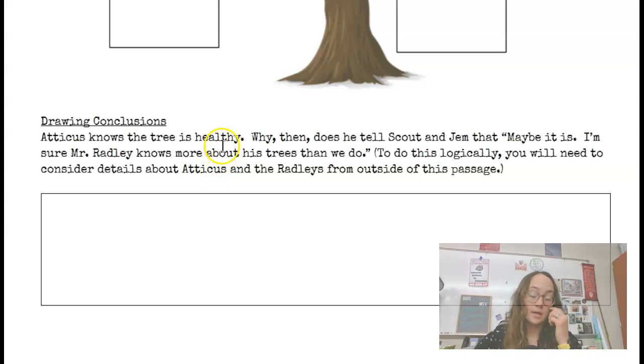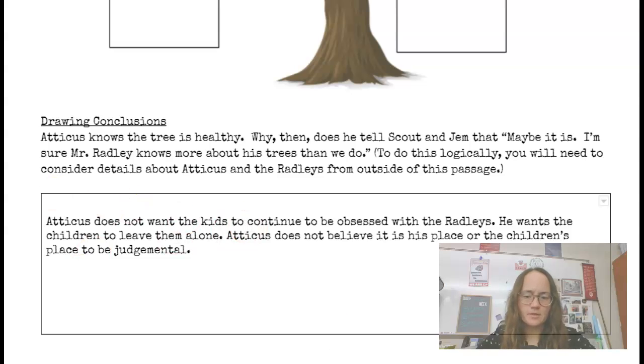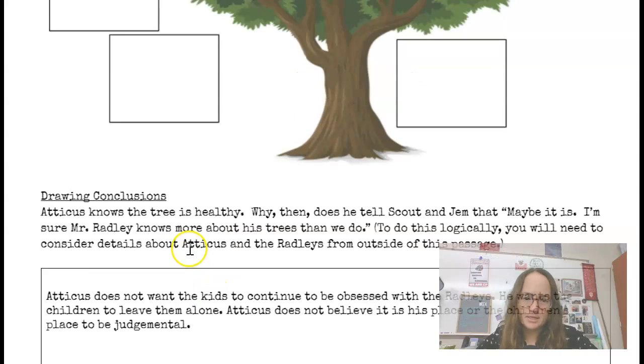Let's go ahead and look at this drawing conclusion section next. It says Atticus knows the tree is healthy. Why then does he tell Scout and Jem that maybe it is? I'm sure Mr. Radley knows more about his trees than we do. To do this logically, you'll need to consider details about Atticus and the Radleys from outside of this passage. So we're asking ourselves why Atticus, when he fully knows that the tree is alive, why would he say that quote? Go ahead and see if you could come up with something and then check back in. You could pause the video, check back in to see if your answer is somewhat similar. So for this one, we could write something along the lines of Atticus does not want the kids to continue to be obsessed with the Radleys. He wants the children to leave them alone. Atticus does not believe it is his place or the children's place to be judgmental.